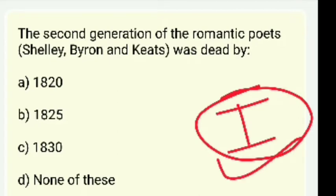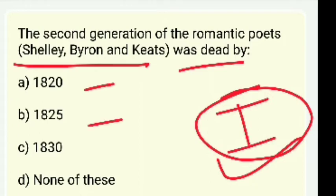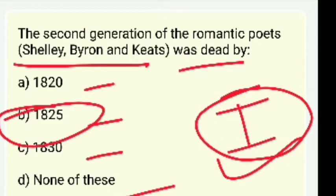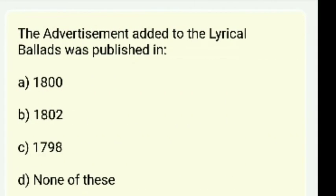The second generation of Romantic poets — Shelley, Byron, and Keats — were all dead by which year? Options are 1820, 1825, 1830, or none of these. The right answer is 1825.